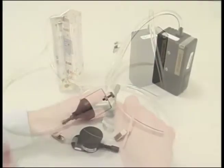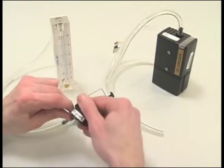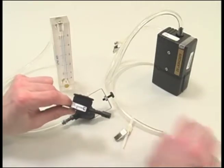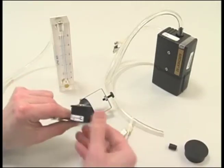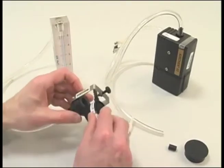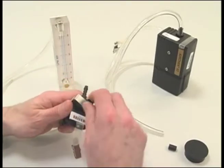After sampling is completed, a post calibration must be performed on the pump. Perform the post calibration the same way you did the pre calibration, using the marked calibration IOM, but do not make any set screw adjustments.